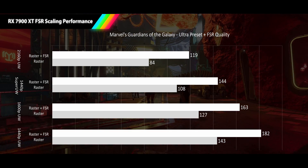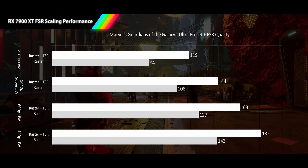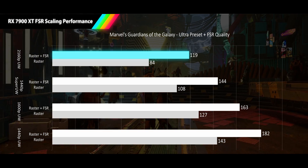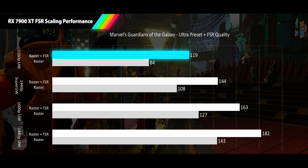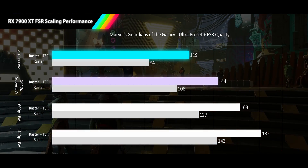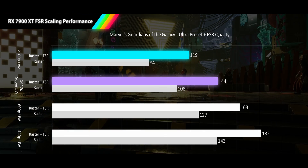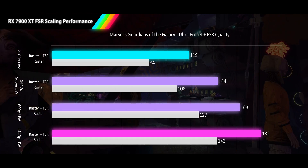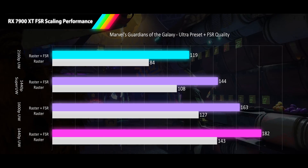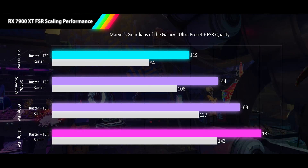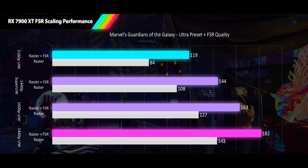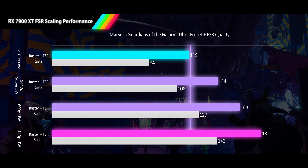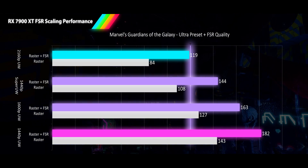Next up, and our first game to also have ray tracing results to examine, is Marvel's Guardians of the Galaxy. We see some great scaling, with 4K ultrawide coming in at 42% better performance, 1440p super ultrawide getting 33%, and our 1600p and 1440p ultrawides getting 28% and 27% respectively. With almost every resolution at or well above 120Hz, FSR will be exceeding or pushing the limits of what most monitors at these resolutions can even achieve.